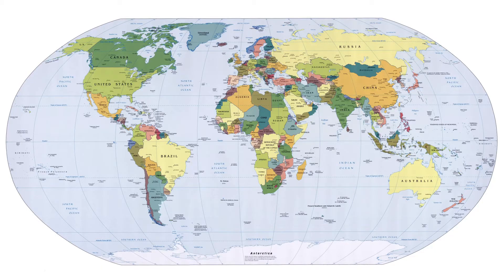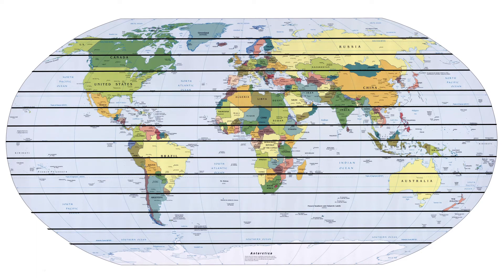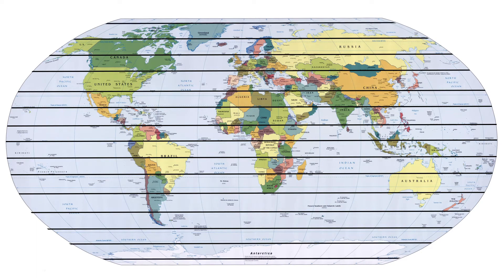The second factor is latitude. Latitude measures a location's distance from the equator. On this map, the equator is here. These lines running parallel to the equator are lines of latitude.